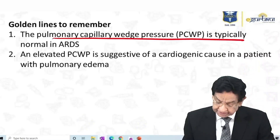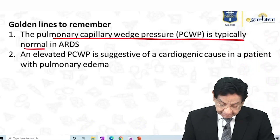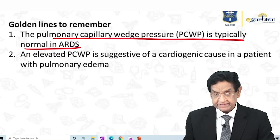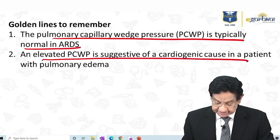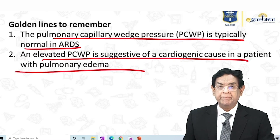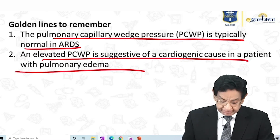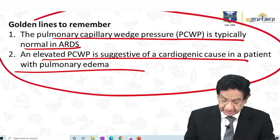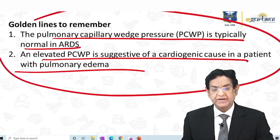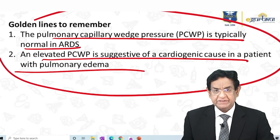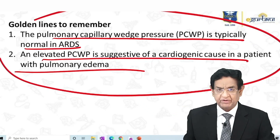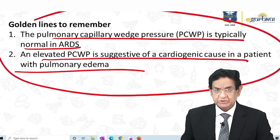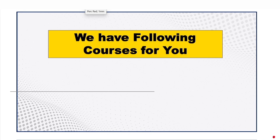Golden line to remember: pulmonary capillary wedge pressure is typically normal in ARDS. If it is elevated, this indicates cardiac pulmonary edema. This is a very, very important line — don't forget. In 99% of exams you write, you will get this line in one way or another.